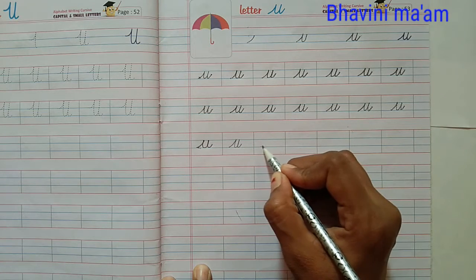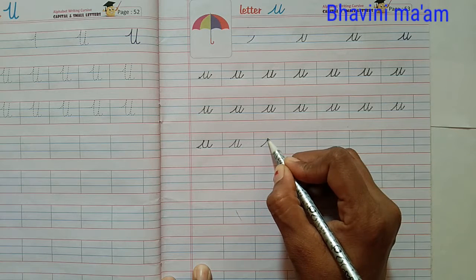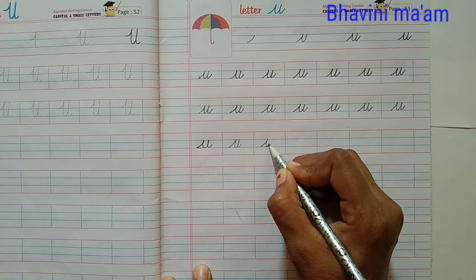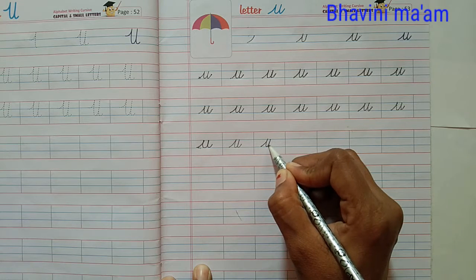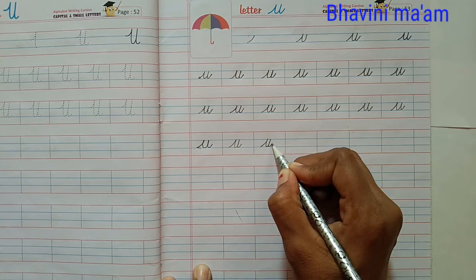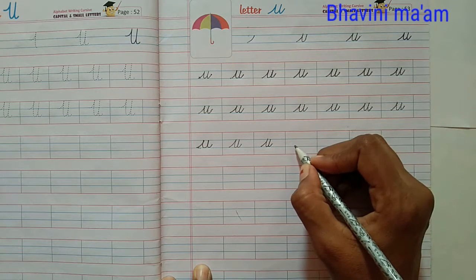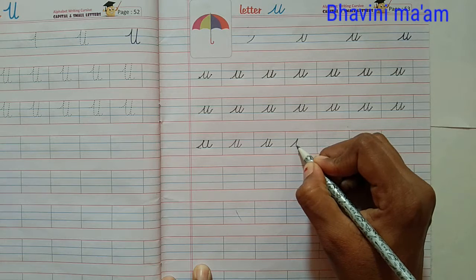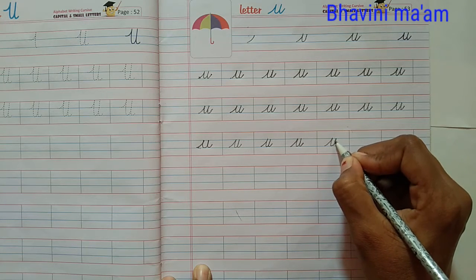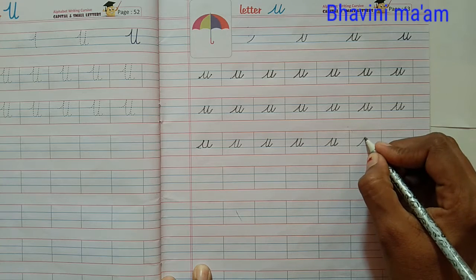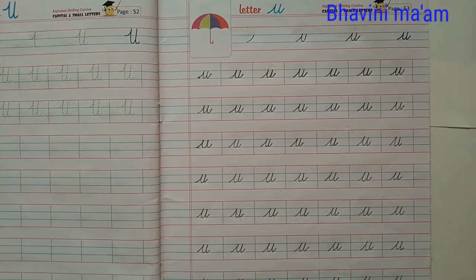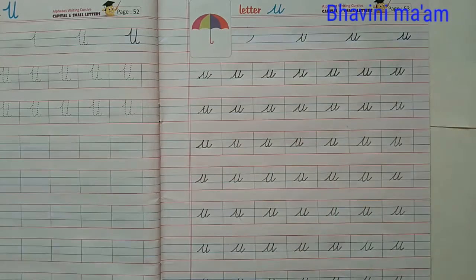Start from here go up come back down and make a up curve then come on the same line and this slanting line. Small letter U, letter U complete. Now we will write in English cursive letter notebook.